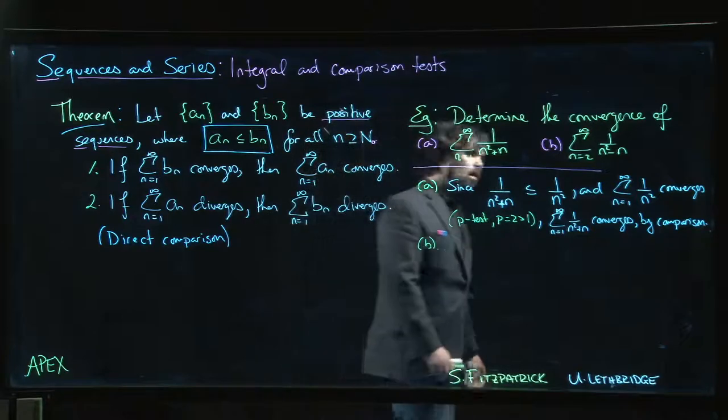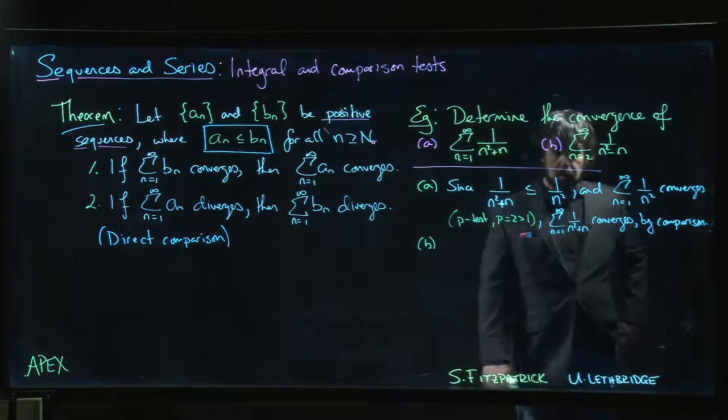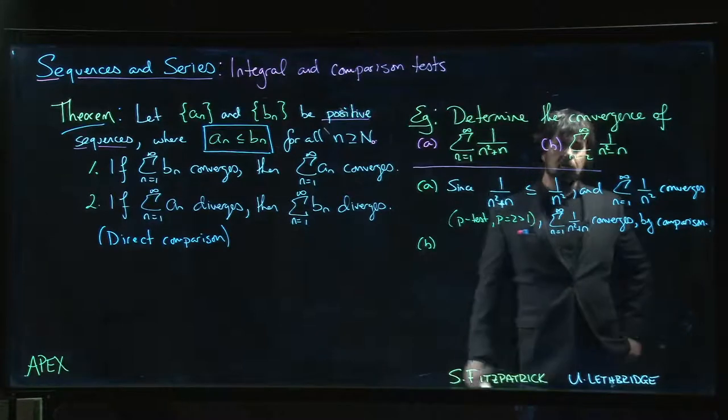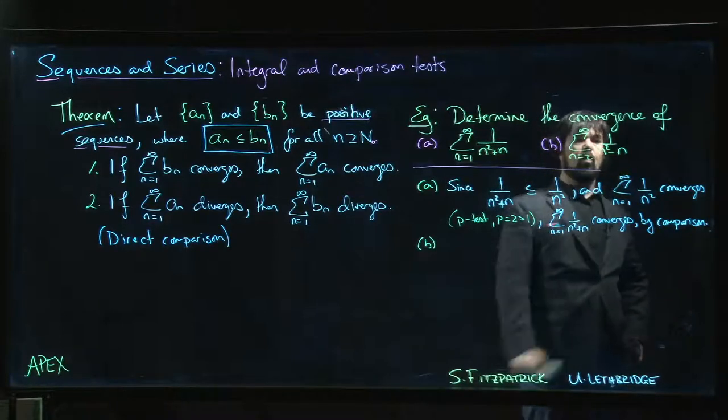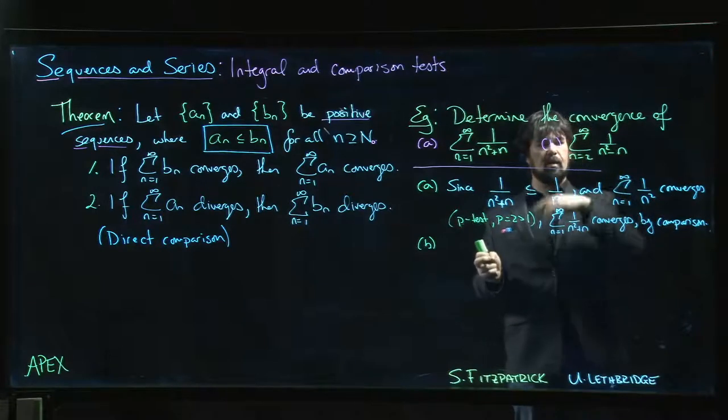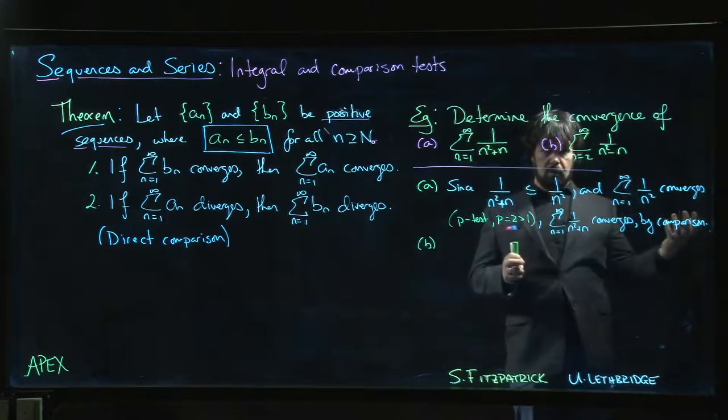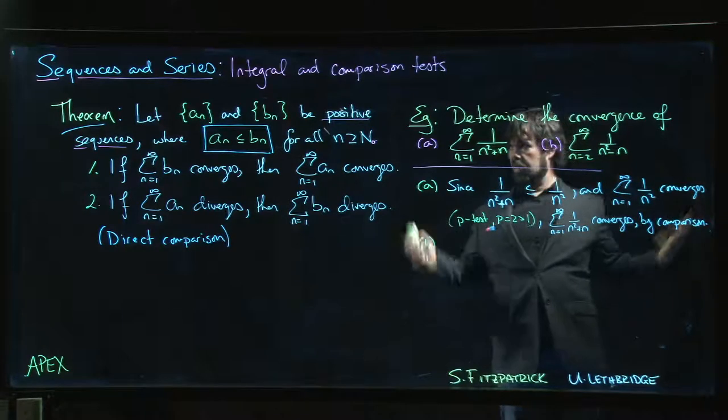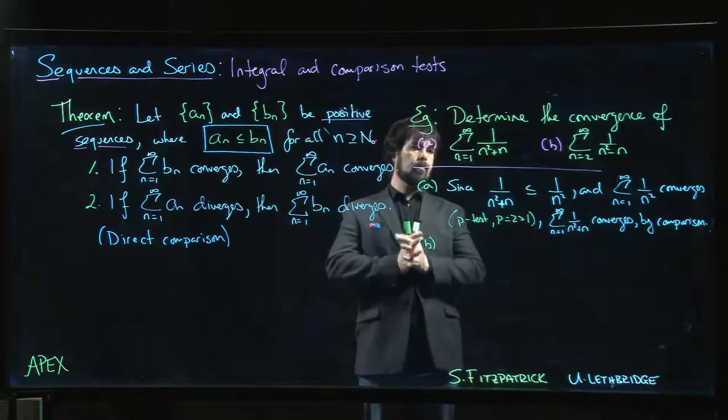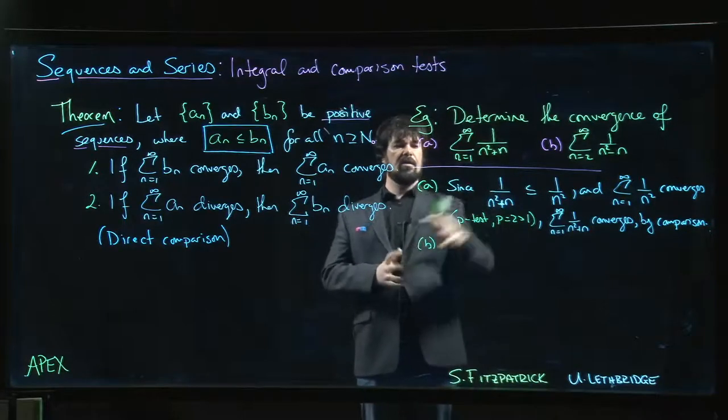The only other difference you'll notice is I started the sum at 2, because 1 - 1 would give me a 0 in the denominator, which is not good. But as long as n ≥ 2, n² - n is going to be positive, so we have a positive sequence—we're good to go on that. But we can't do the same sort of direct comparison that we just did if we try it.